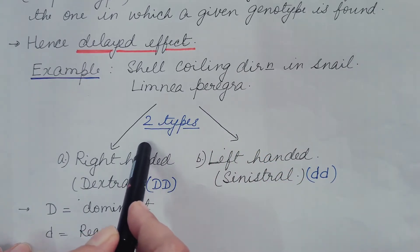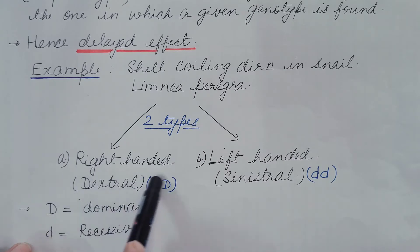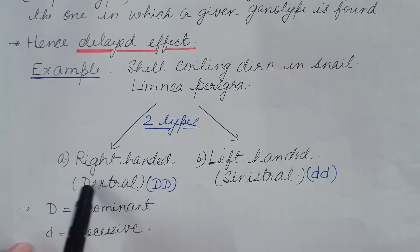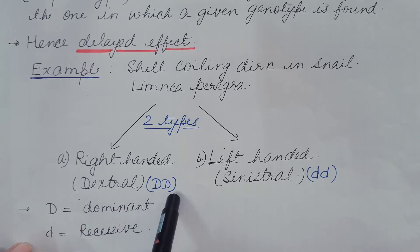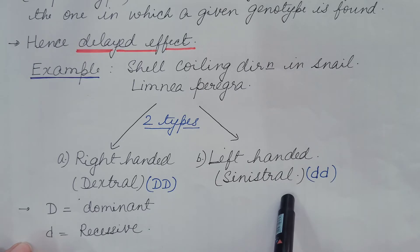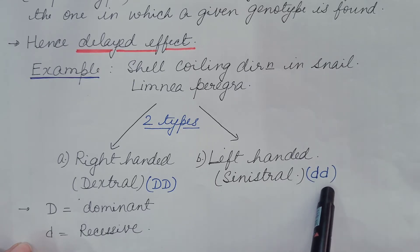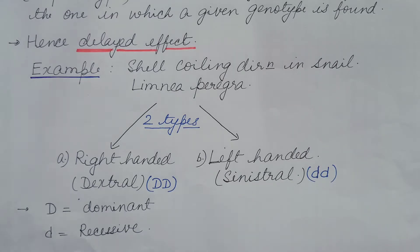We will understand this by taking the example of shell coiling direction in the snail Limnea peregrina. There are two types of shell coiling: one is right-handed, also known as clockwise or dextral, with genotype capital DD; the other is left-handed or sinistral, which is anti-clockwise, with genotype small dd. Here, capital D is dominant and small d is recessive.